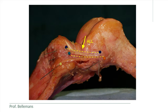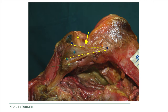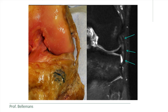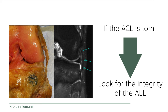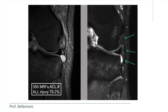Here you see some examples from the dissections. The good news is that the anterolateral ligament is also easy to visualize on MRI — once you know where to find it, you cannot miss it. That is important because whenever you see a torn ACL on MRI, you really need to look for the integrity of the anterolateral ligament. We demonstrated in a study of 350 ACL-ruptured athletes that in 79% — almost 80% — the anterolateral ligament was severely damaged as well. This is quite logical if you understand how the ACL and the ALL work together and therefore often get injured together.